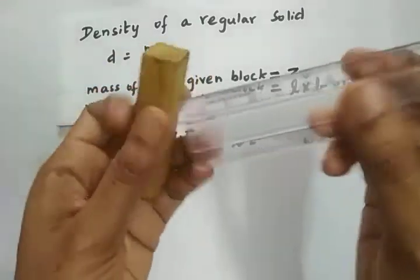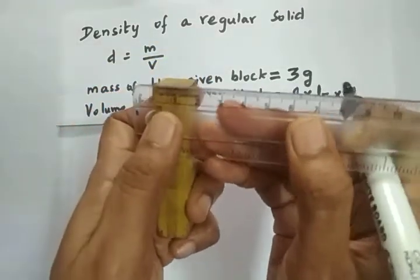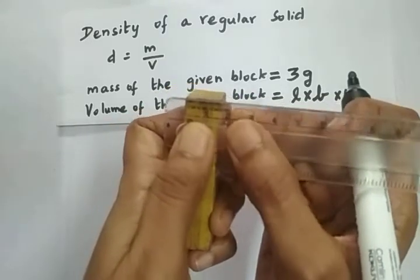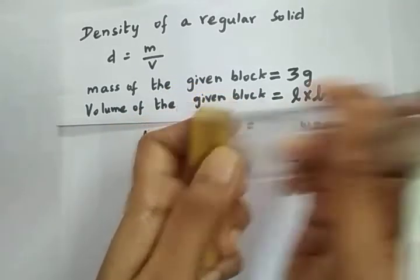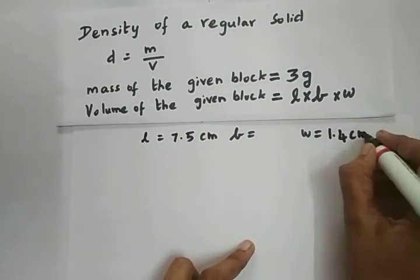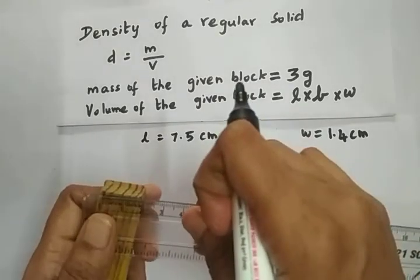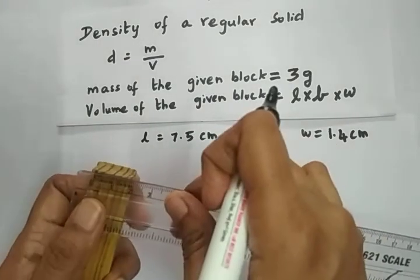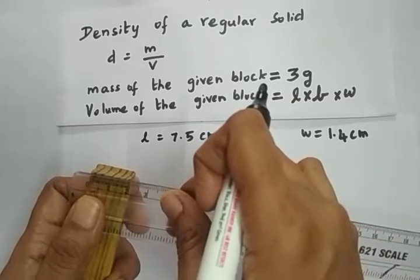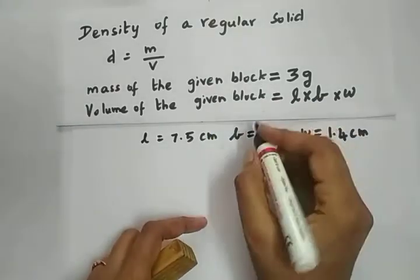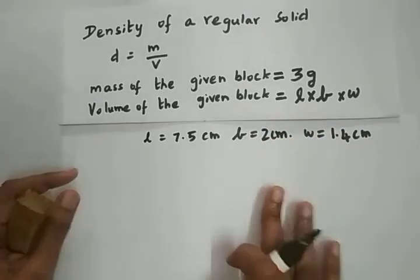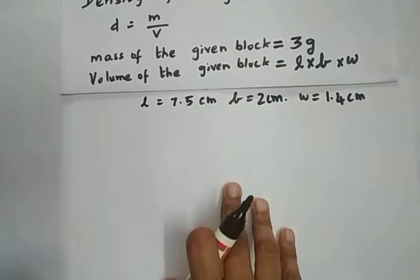Now we will find the width. The width is 1.4 centimeters — from 0 to 1.4, it is not exactly 1.5. Now we will find the breadth. The breadth is 0 to 2 centimeters, so it is 2 centimeters. Learn to use the scale properly so that you can find the volume or any quantity accurately.